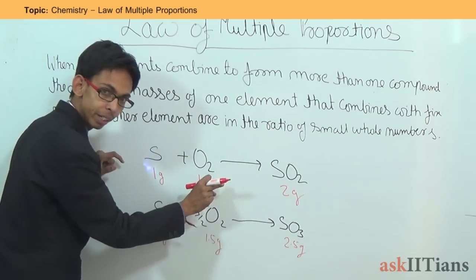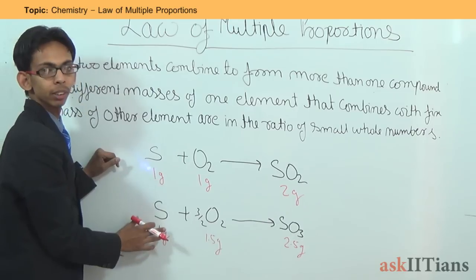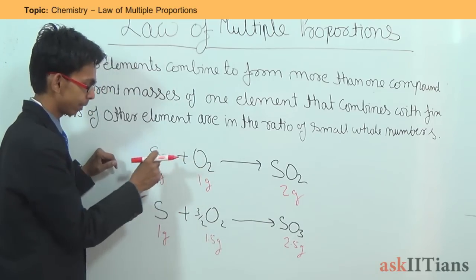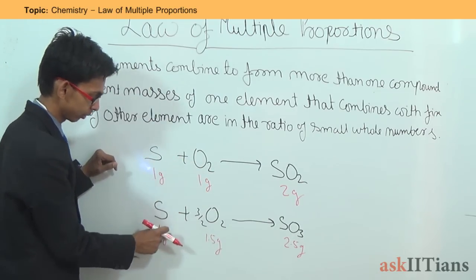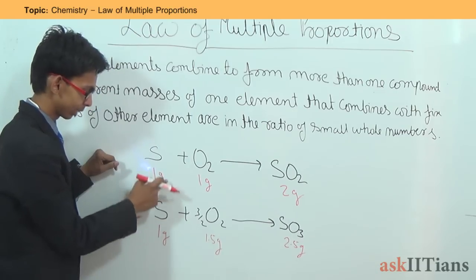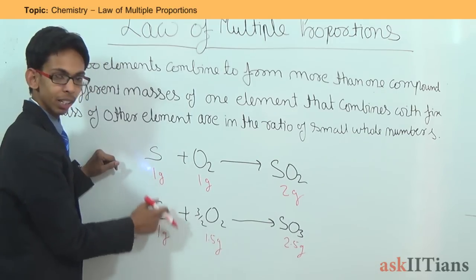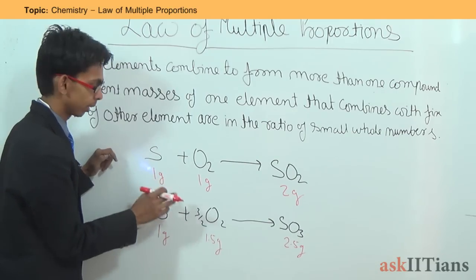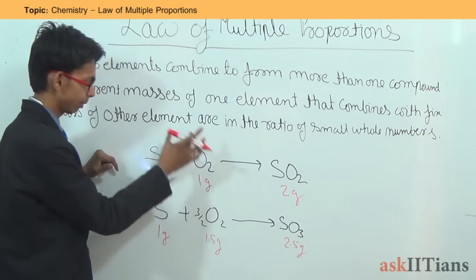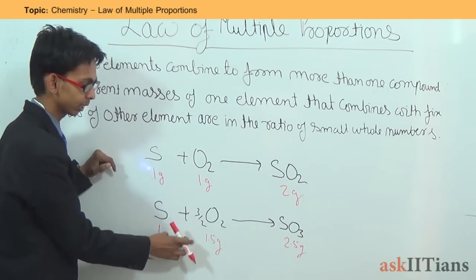Oxygen is the element combining with the fixed mass of sulfur. As you can see, the mass of sulfur is 1 gram in both reactions, so oxygen is the element whose different masses we are comparing across the two reactions.